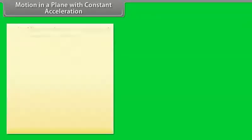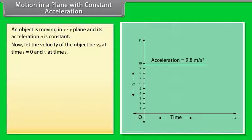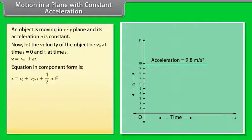Motion in a plane with constant acceleration. Let us take an example to understand. An object is moving in XY plane and its acceleration A is constant. Now let the velocity of the object be ν₀ at time T equals 0 and ν at time T. ν equals ν₀ plus At. This is the equation in component form.